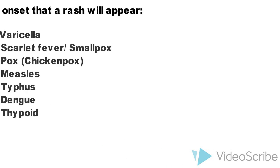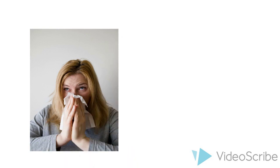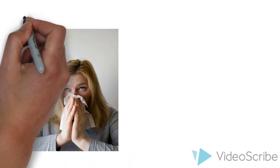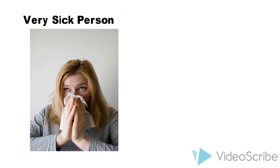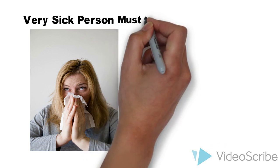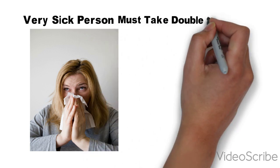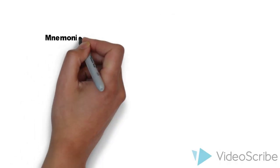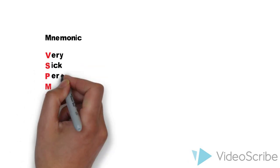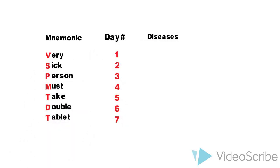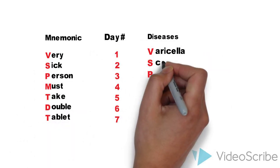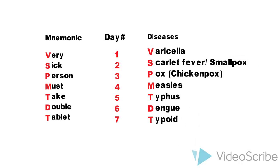There's a quick and easy trick to learn and remember this. The mnemonic for day of appearance of rash in a febrile patient is: 'Very Sick Person Must Take Double Tablets,' where the first letter of each word represents a disease in increasing order of day from 1 to 7, as shown in this slide.